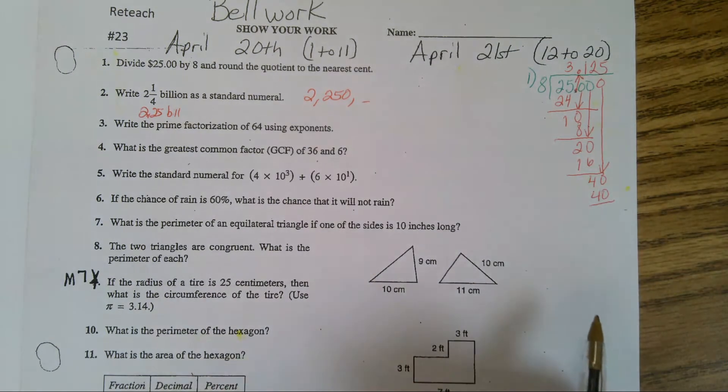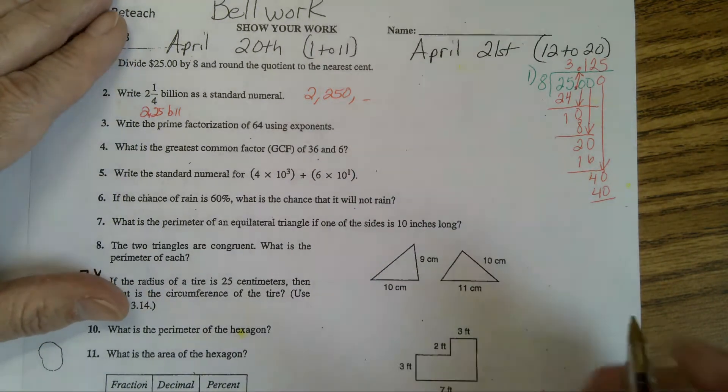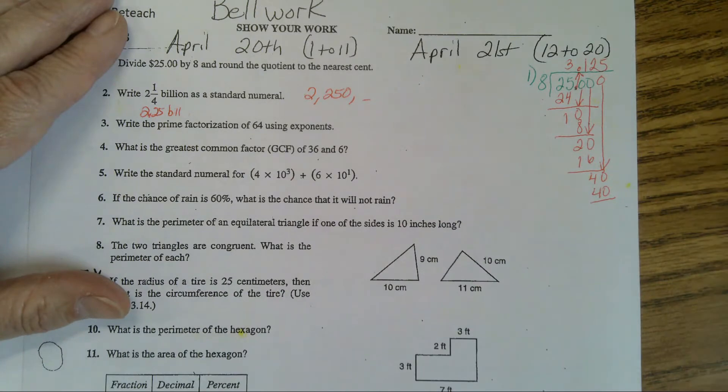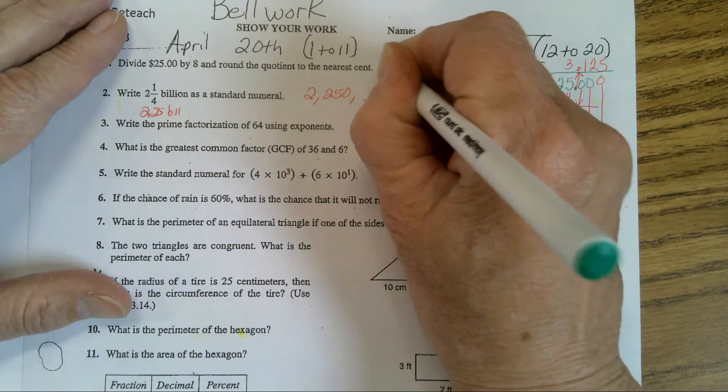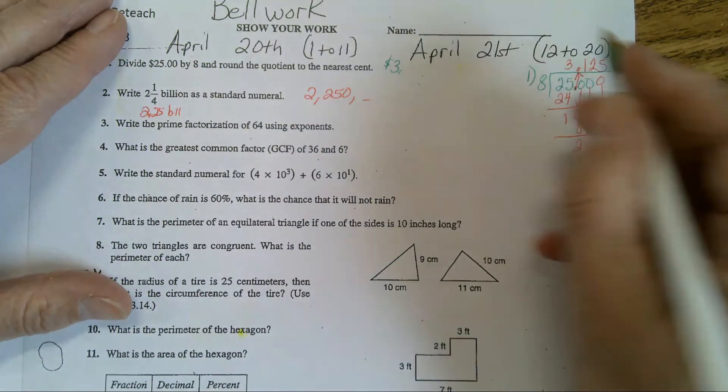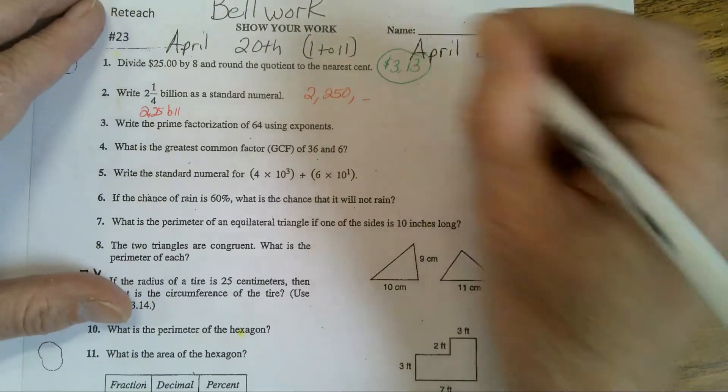In number 8, it wants it to the nearest cent, so it's going to be $3.13. If you put down the other, you would not get it counted right. So it's $3, the 5 turns the 2 into a 3, 13 cents, the answer to number 1.